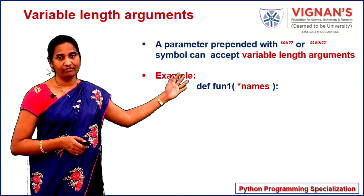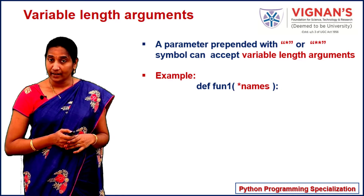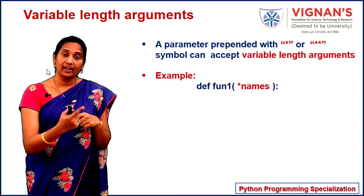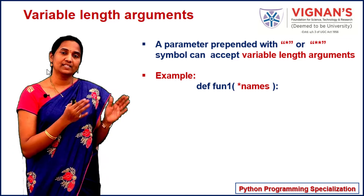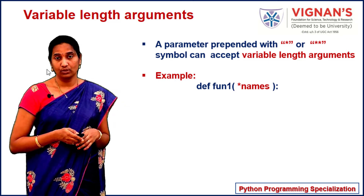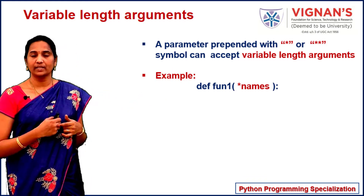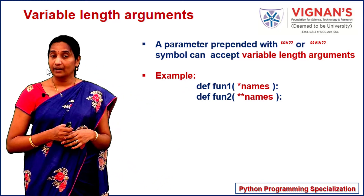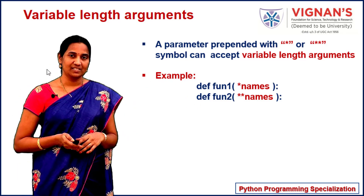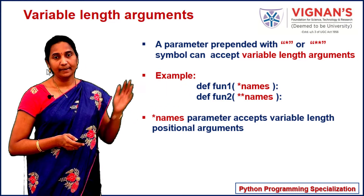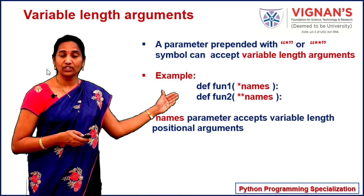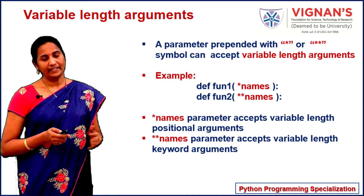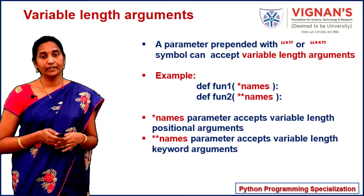For example, consider this function definition fun1, where there is a parameter names prepended with a single asterisk symbol. That means this parameter names can later allow a variable number of arguments — you can send one argument, two arguments, or even no arguments. Similarly, in the definition of fun2, there is a parameter names prepended with two asterisk symbols. In fun1, the parameter names accepts variable length positional arguments, whereas in fun2, the parameter names accepts variable length keyword arguments.